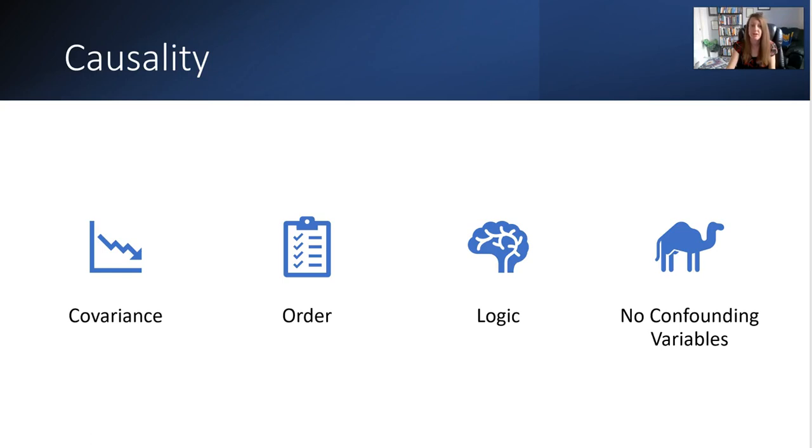In order to determine causality, we need to meet these four criteria: covariance, order, logic, and having no confounding variables. So let's look at these one at a time.